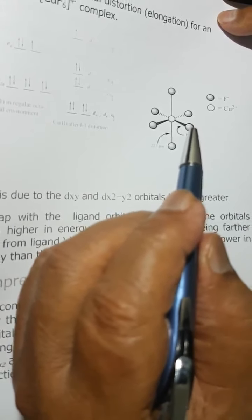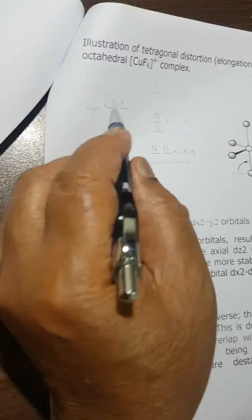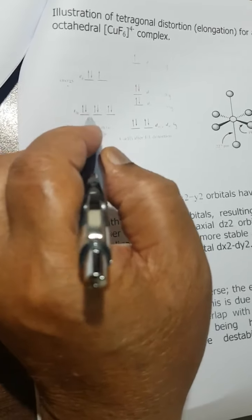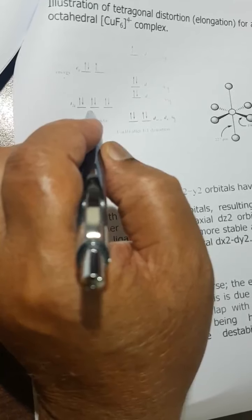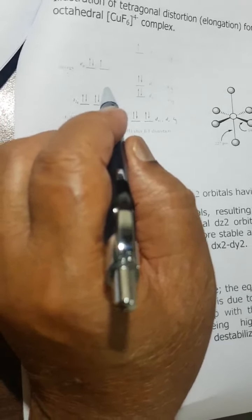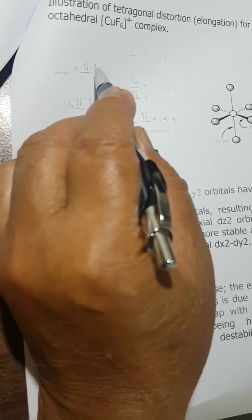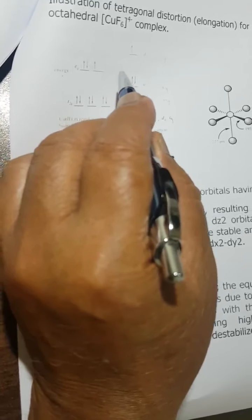In a regular octahedral complex, all bond distances are the same. But in the case of copper, it's a d9 system, so orbitals are unequally occupied and distortion will happen.